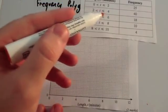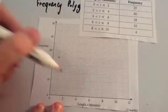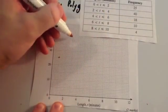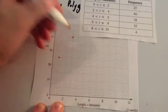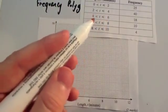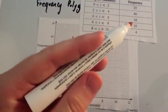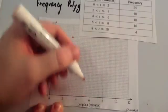Next one: 2 to 4, the midpoint's 3 and frequency is 40. So 3 across, 40 up. Next one: 4 to 6, the midpoint's 5 and the frequency's 18. So 5 across, 18 up.